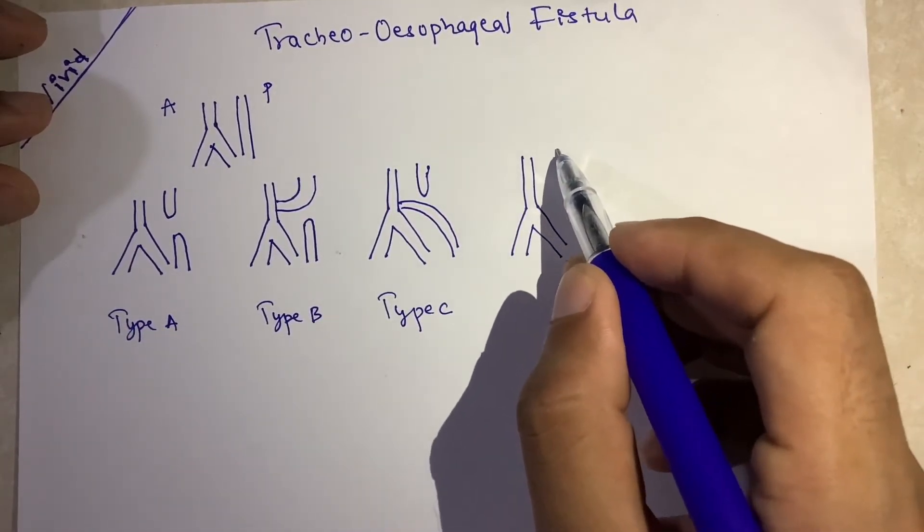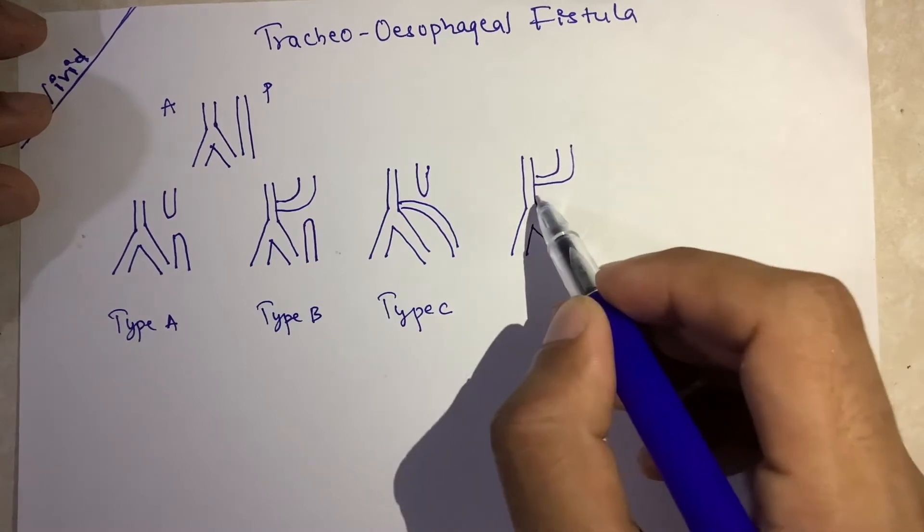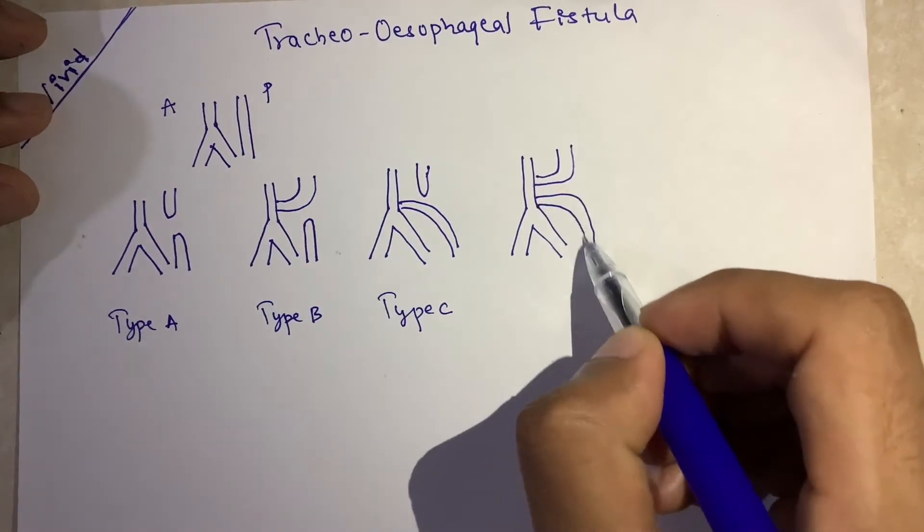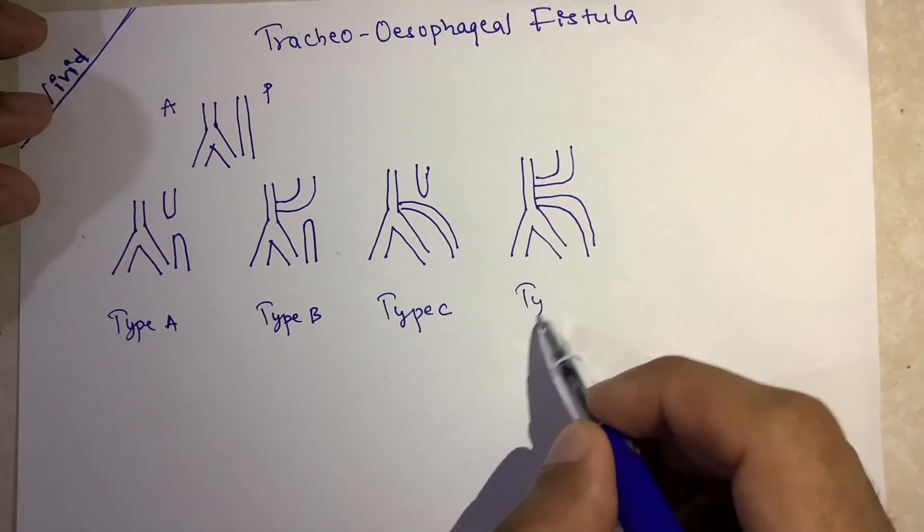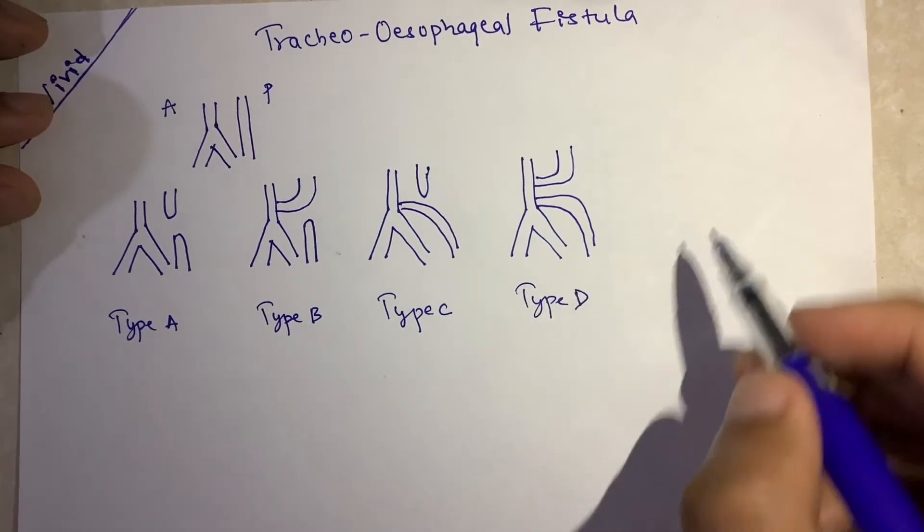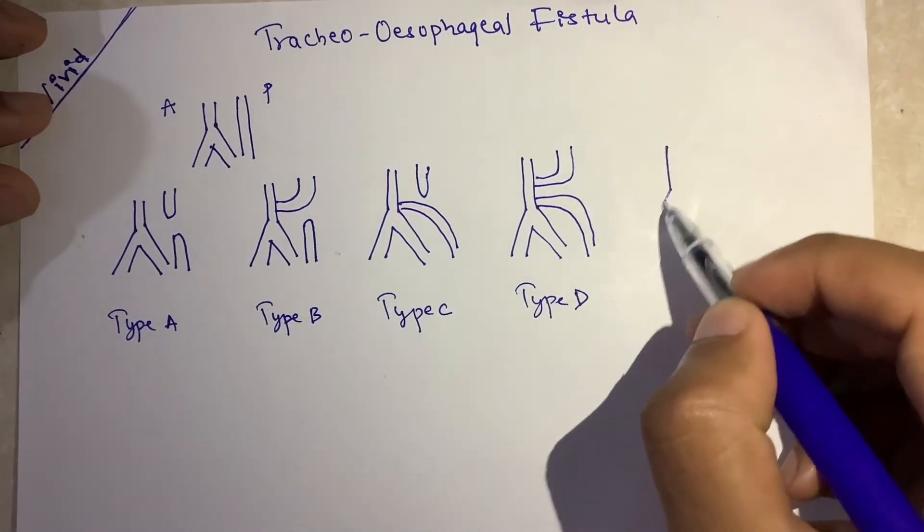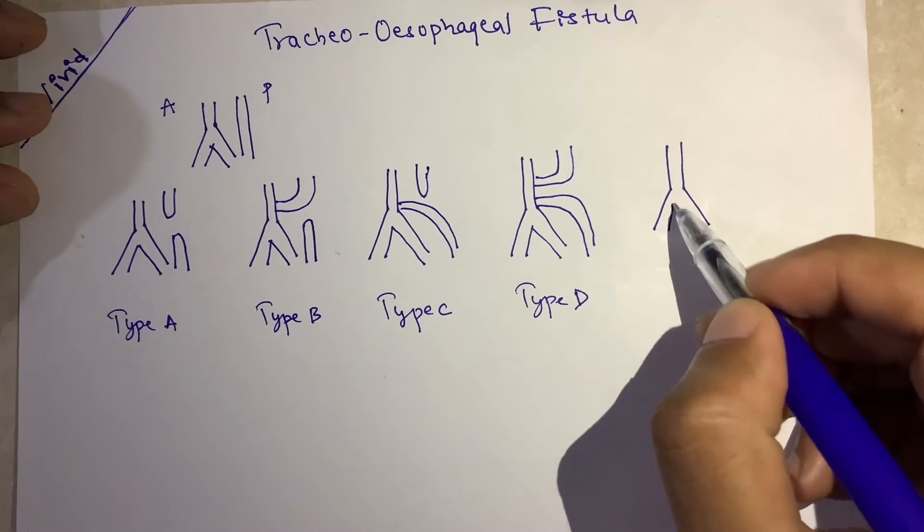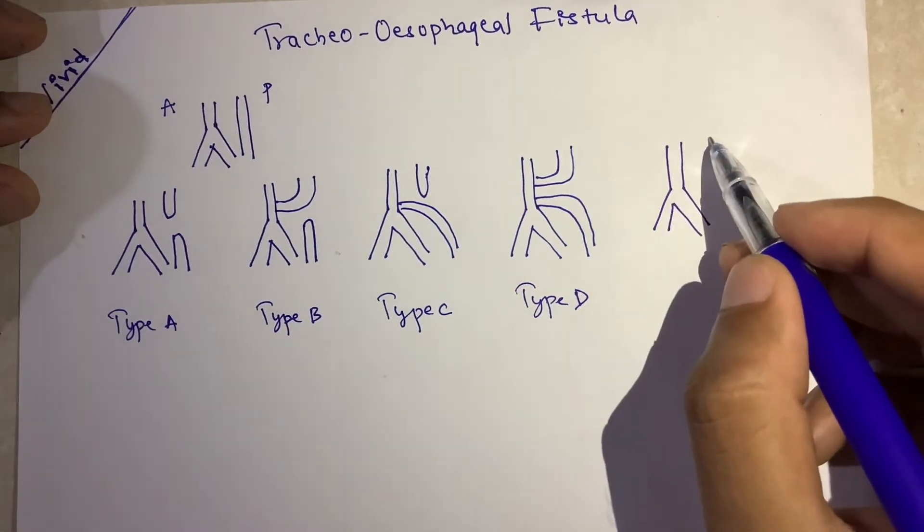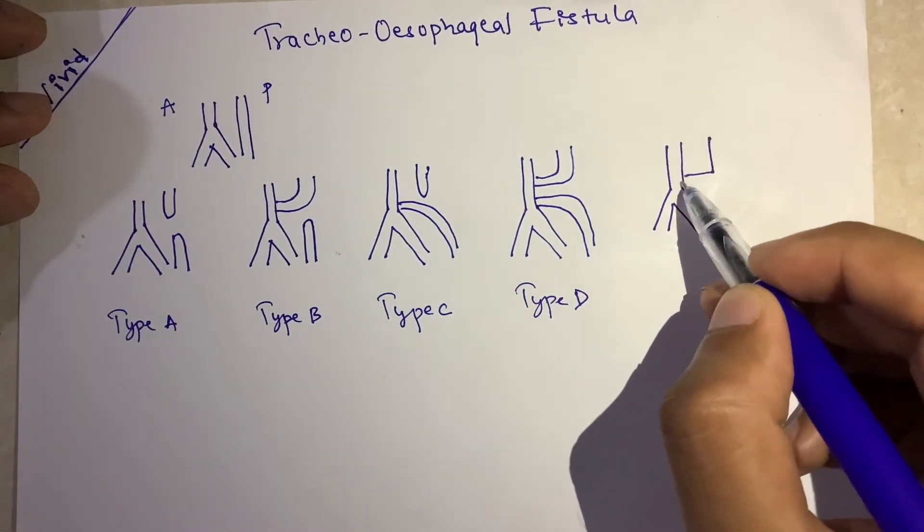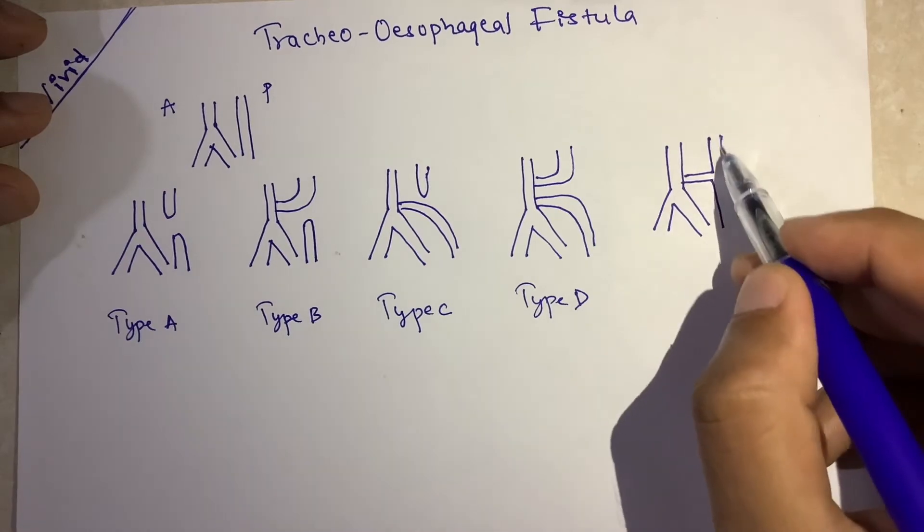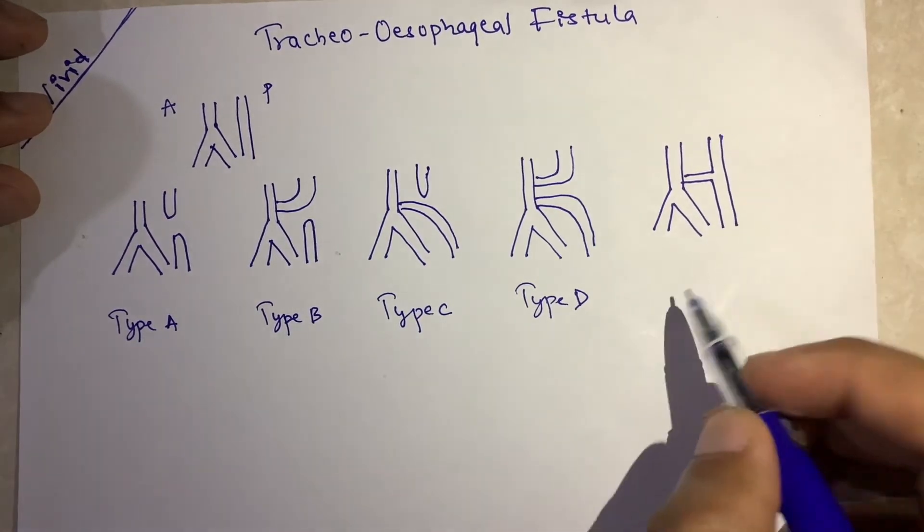In type D, both distal and proximal are continuous independently with the trachea. In the last type, that is type E, both fuse with each other and also with the trachea. This is type E.